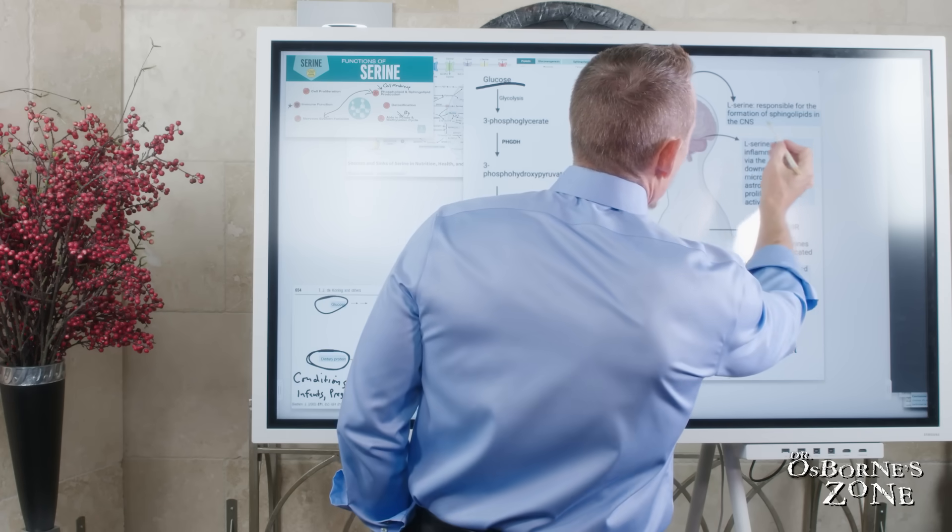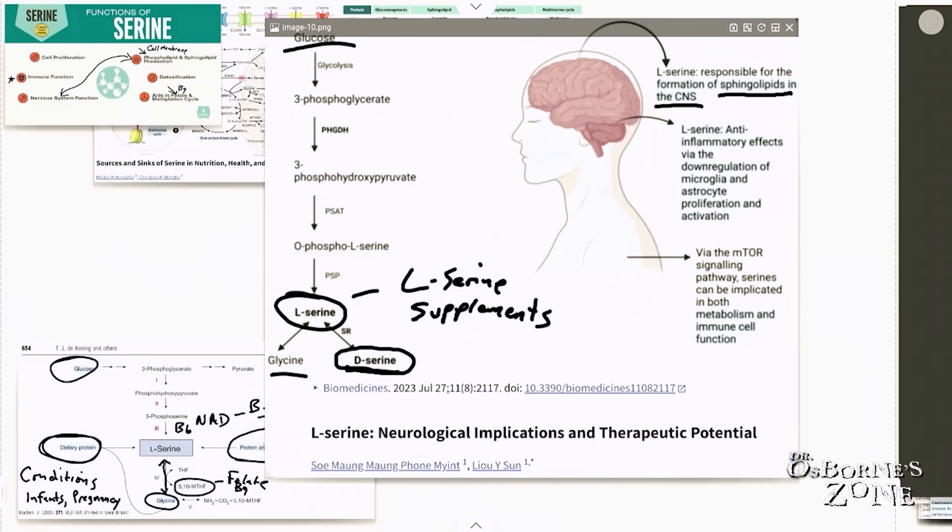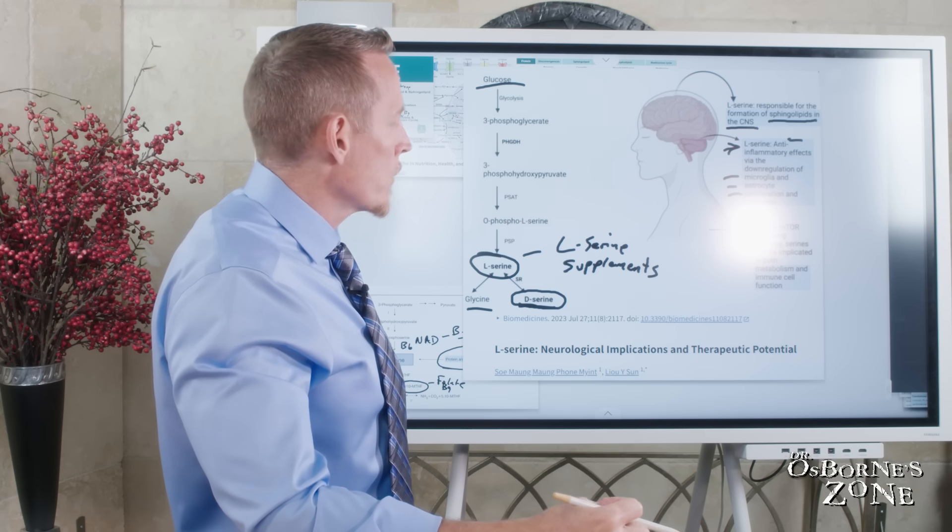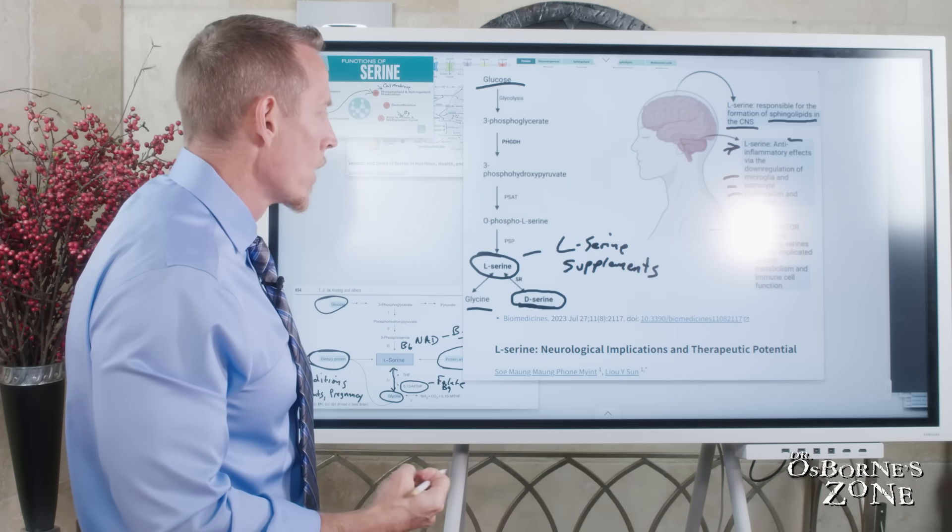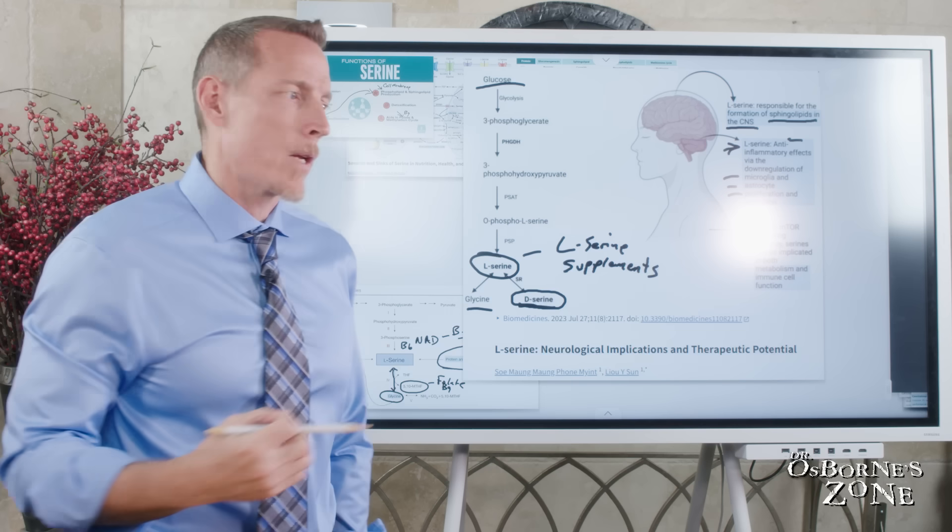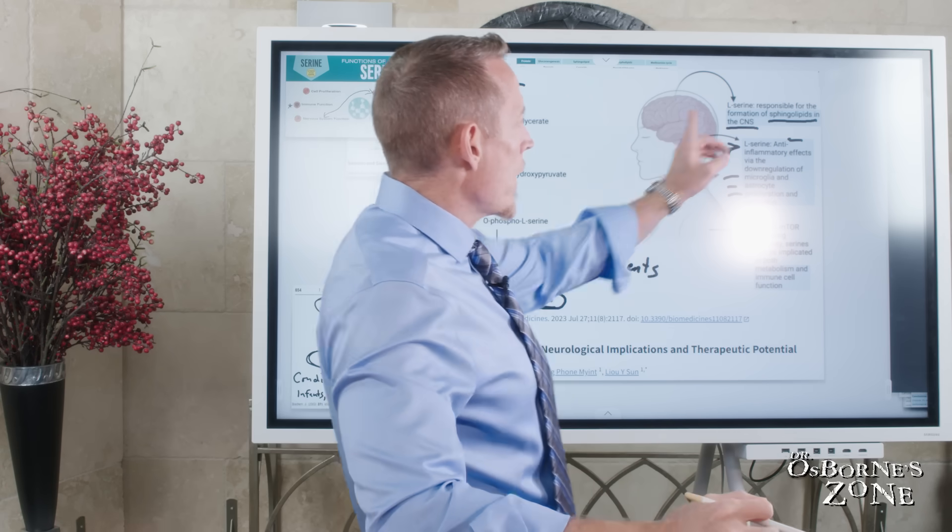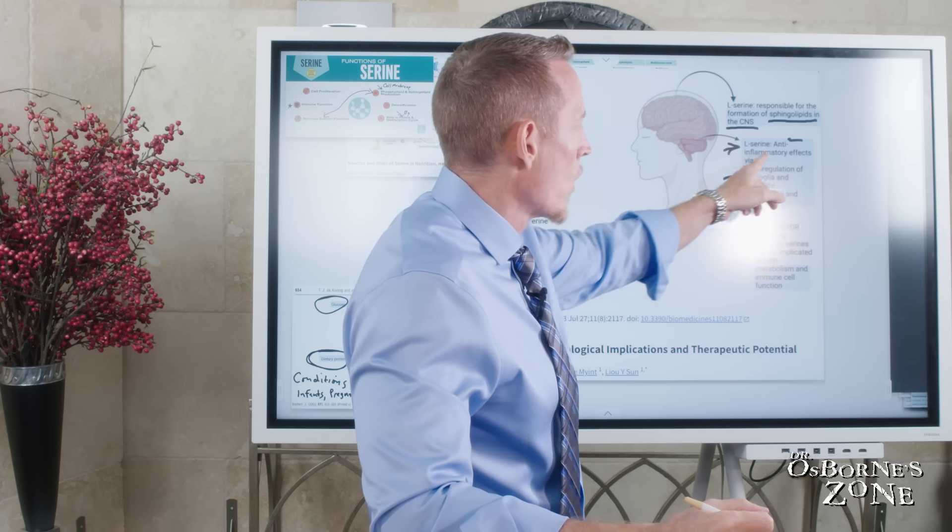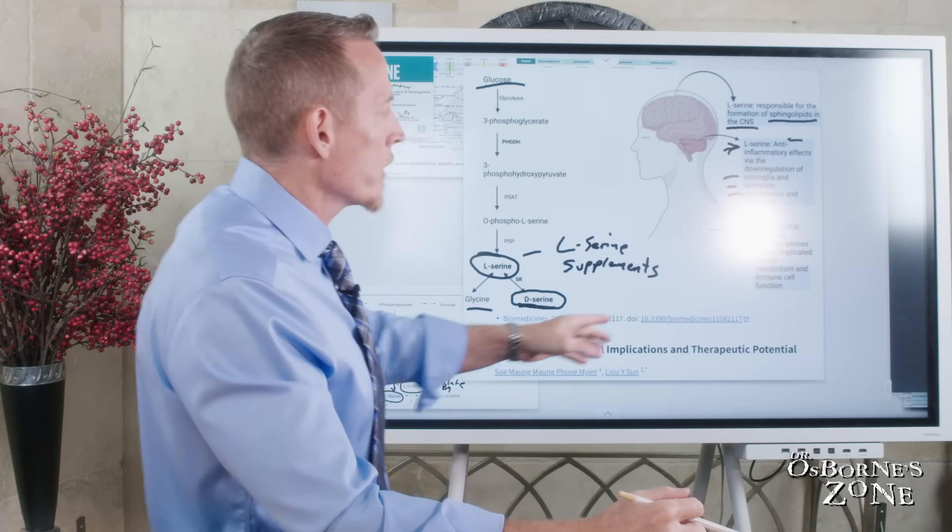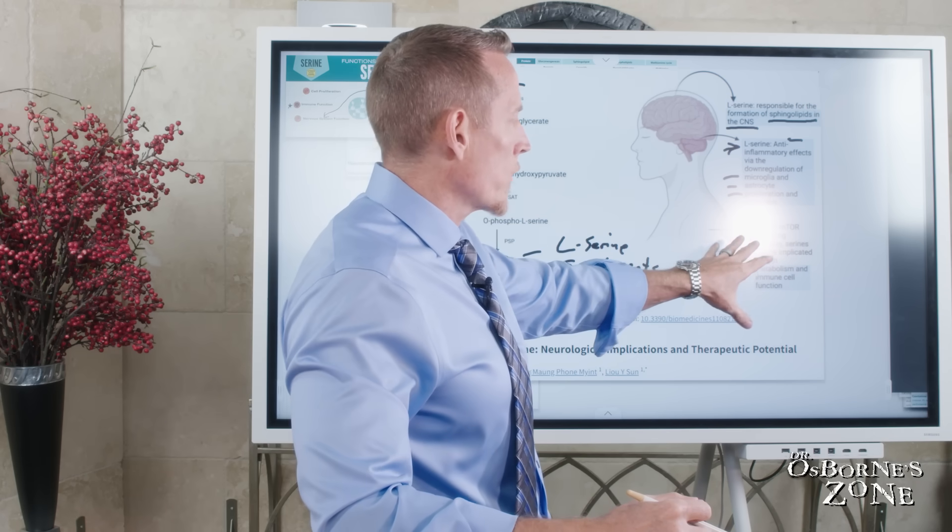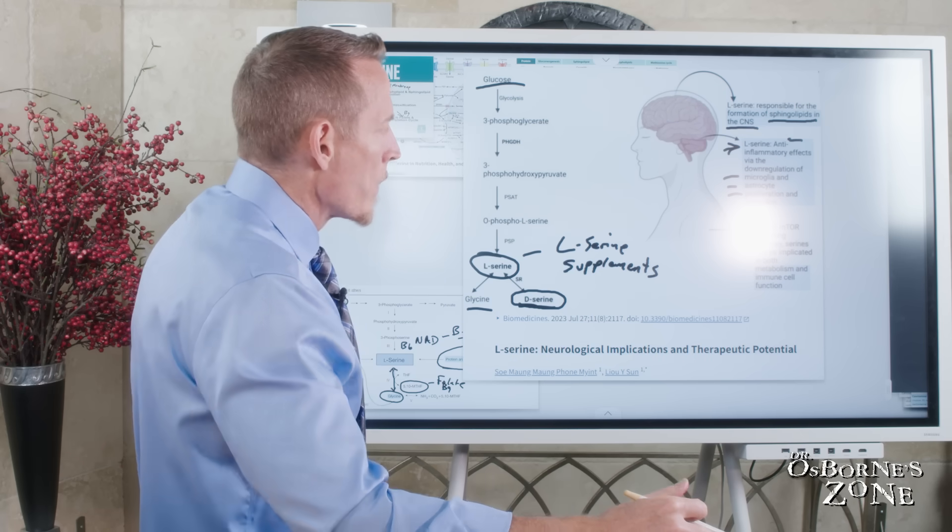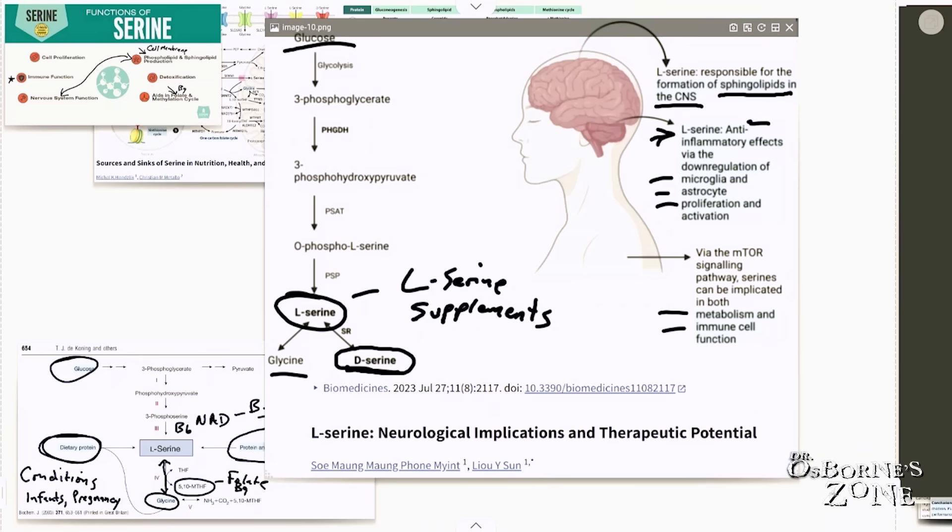You can see up here, it's responsible for sphingolipids in the central nervous system. These are the fats that surround your brain cells that help them function properly. L-serine also plays a role as an anti-inflammatory via its down-regulation of microglia and astrocyte proliferation and activation. Microglia and astrocytes are special neurological cells that play a role in inflammation of the brain. This is where serine is arguably being the most well-researched right now is in its role around neurofibrillary tangles in the brain. But we also know that serine plays a role in something called mTOR signaling. And this is one of those pathways that protects and preserves humans from accelerated aging inflammation. Its role in metabolism and immune function are very important.